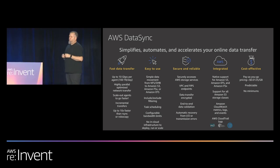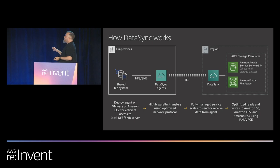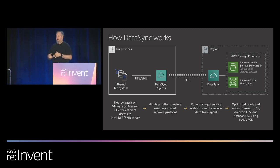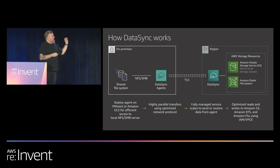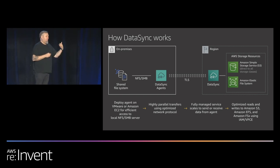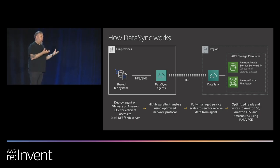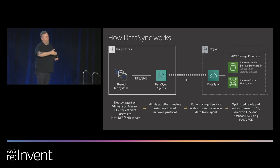We recently lowered the price — it's $0.0125 per gigabyte of data transferred. The DataSync agent is a virtual machine, not a software agent installed in an OS. You deploy it, connect it to your NFS or SMB file share, create jobs, filter what to include or exclude, and schedule transfers. Your agent in your data center connects to a managed instance we stand up on your behalf. When it gets to that instance, the data is decrypted, decompressed, and then transferred through your VPC into S3 or EFS.